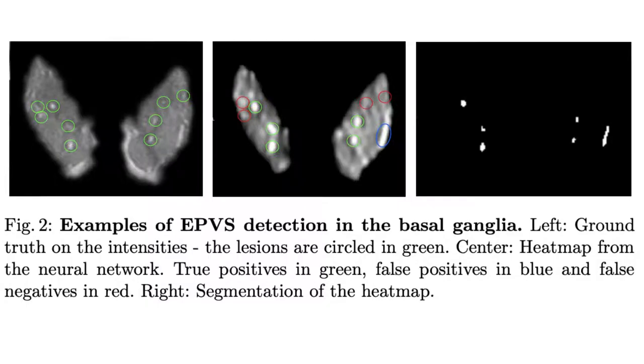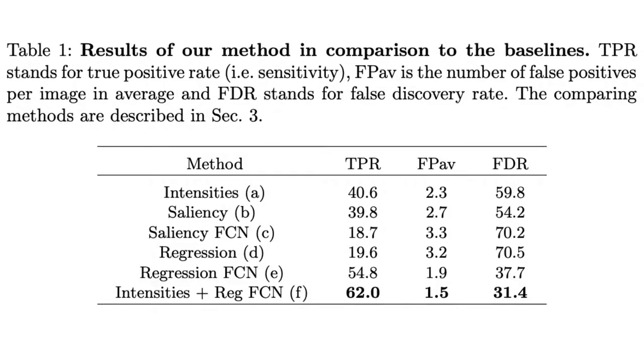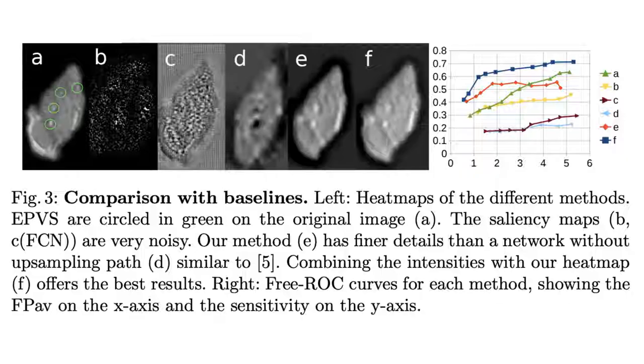We evaluate the proposed network on the detection of enlarged perivascular spaces in the basal ganglia in MRI. Our method achieves a sensitivity of 62% with, on average, 1.5 false positives per image. Compared with four other approaches based on intensity thresholding, saliency, and class activation maps, our method has a 20% higher sensitivity.